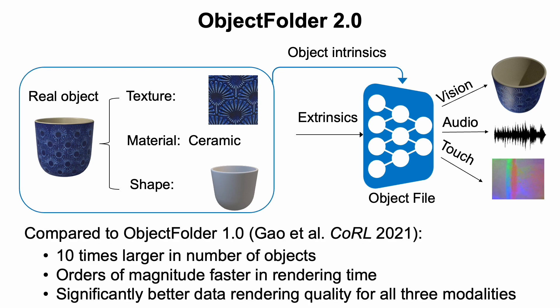Compared to Object Folder 1.0, our dataset is 10 times larger in number of objects and orders of magnitude faster in rendering time. We also significantly improve the multisensory data rendering quality for all three modalities.